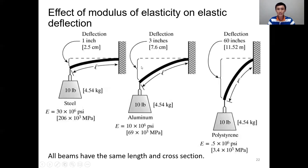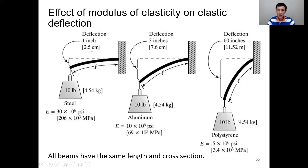For Young's modulus, we most likely expect the material to withstand the most load by having the least deflection, which means a bigger Young's modulus is typically better. So we have three examples here. The first bar is steel, the second bar is aluminum, and the third bar is plastic. The load is all the same — 10 pounds — and all the beams have the same length and the same geometry. As you can see, the bigger the Young's modulus, the less deflection the material will have. So we want the material to have a bigger Young's modulus.